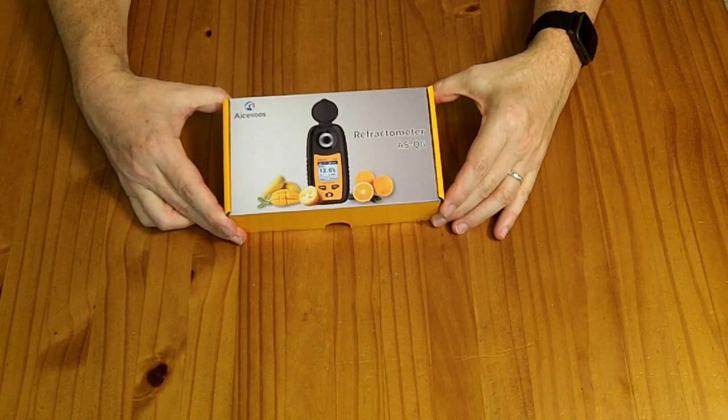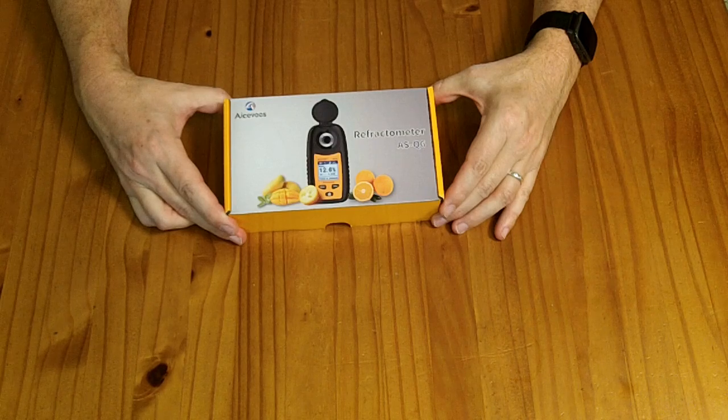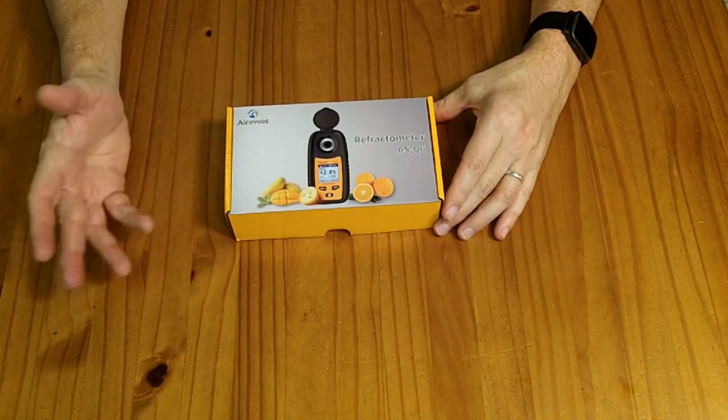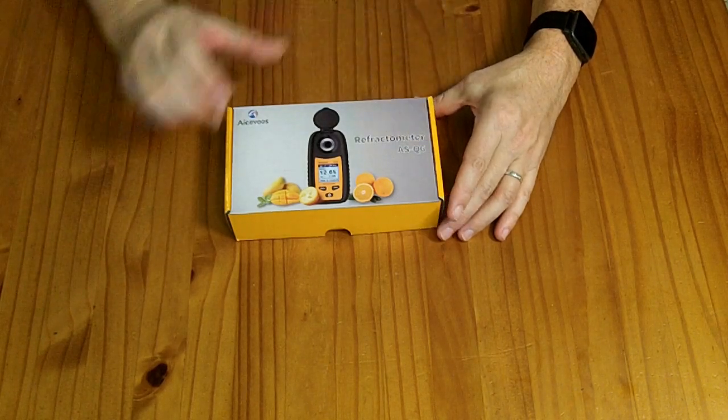This is a refractometer to measure brix, or basically the amount of sugar dissolved in water. It may also be able to measure the amount of other particulates dissolved in water. So this one here says ASQ6.